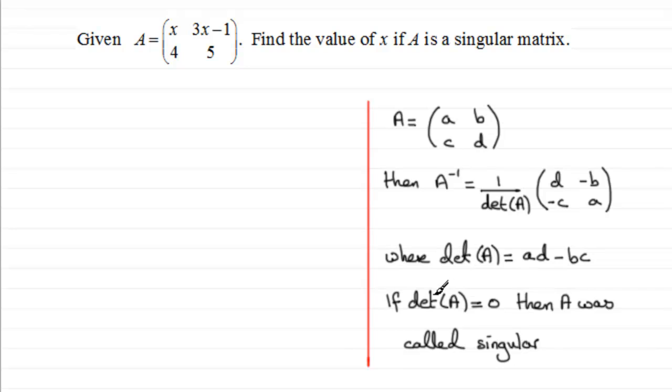And if that determinant of A was equal to 0, then 1 divided by 0 gives us an undefined result. So the inverse of A is not defined. And if that's the case, then A was called a singular matrix.